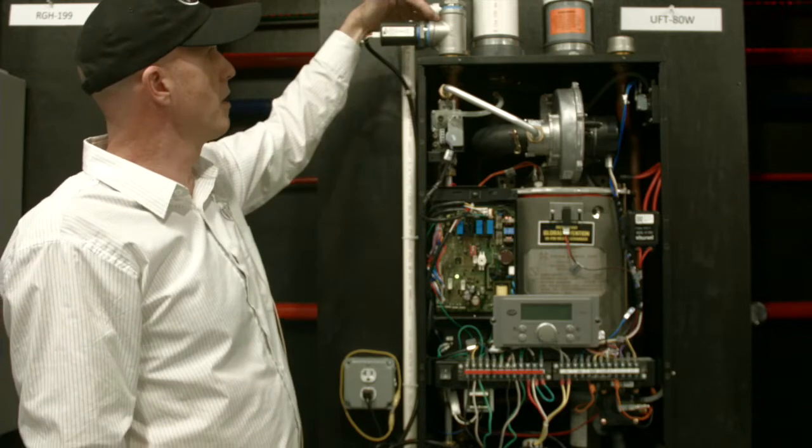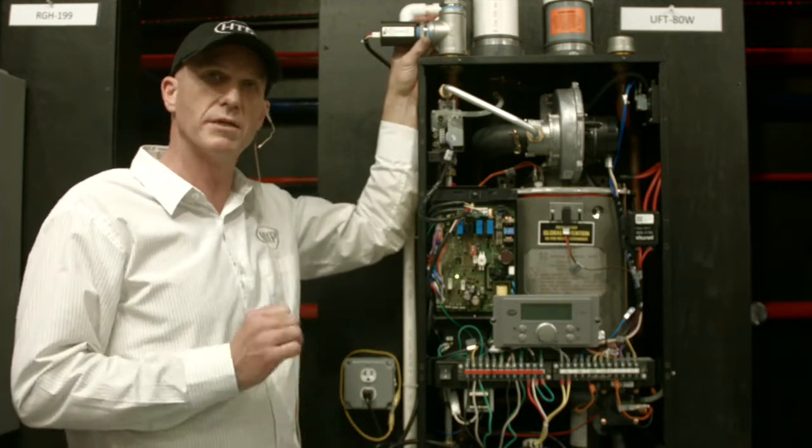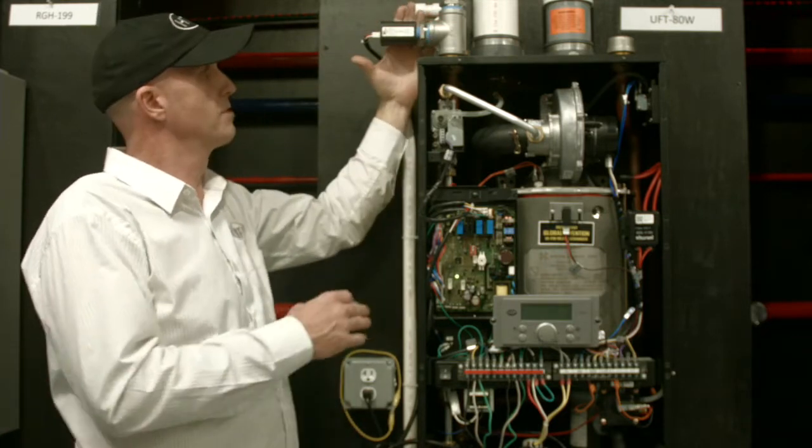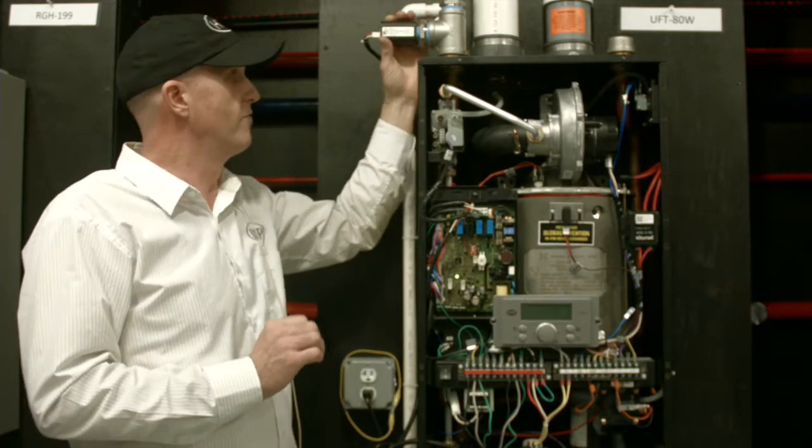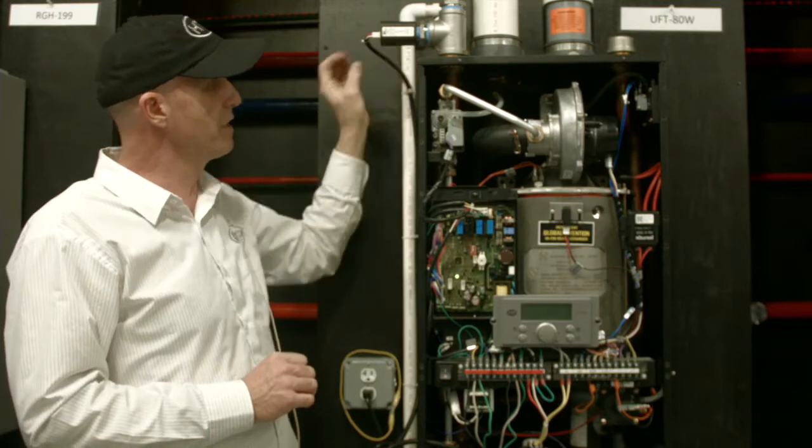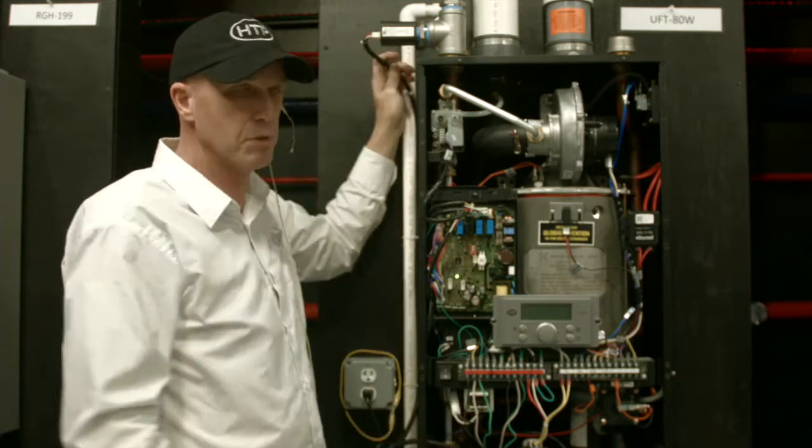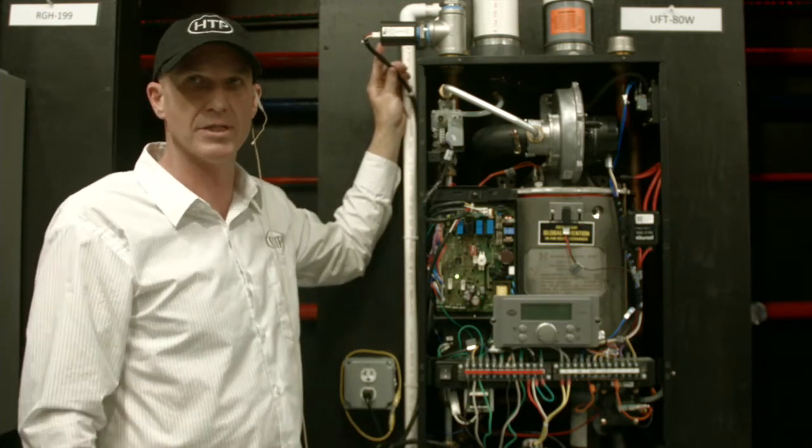We also have up here our UL 353 low water cutoff. So the machine does have a low water cutoff built in. This is a manual reset that's required by some code, so we provide a kit for this. It gives you the device, the fittings, and even the wiring harness to plug it right into our control. Makes a seamless operation.